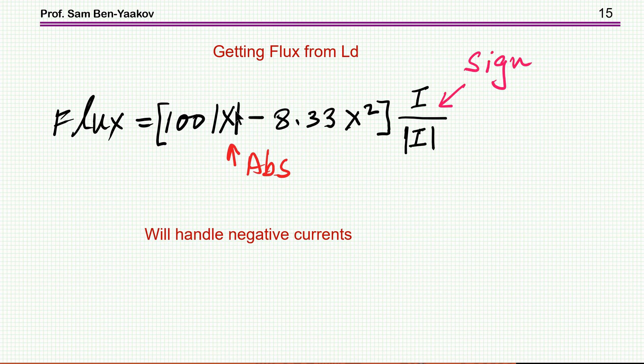First of all, I'll put here the absolute value of I. This is now I in this equation. And I don't have to put it here because this is squared, so it's always positive. And then I have to put a sign on this thing. And I put the sign by taking the current, dividing it by the absolute value of the current. So this gives me the sign of the current. So now the flux is plus minus.